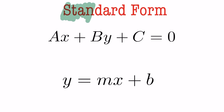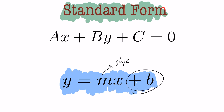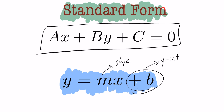In today's lesson, we're going to look at standard form of a linear equation. We've been working predominantly in y equals mx plus b form, called slope-intercept form. The reason it's called slope-intercept form is that you have your slope and your y-intercept easy to read. We're going to look at an equivalent form called standard form, where the slope and y-intercept are not immediately visible — you can't see them directly right away.